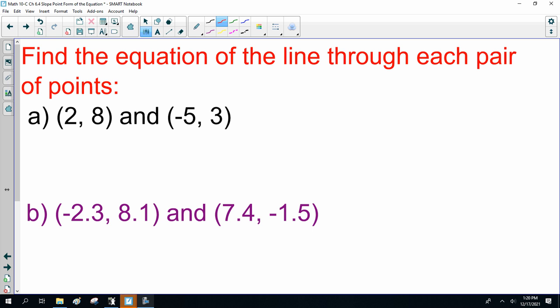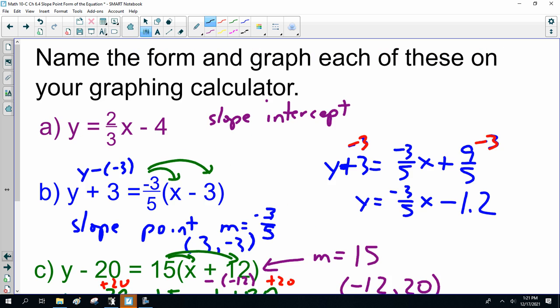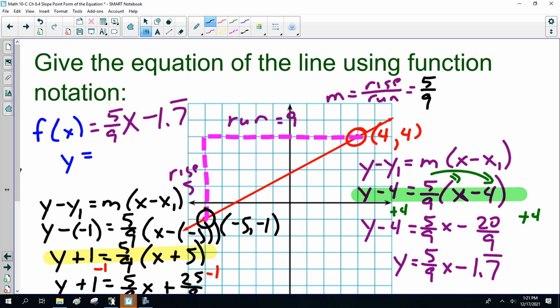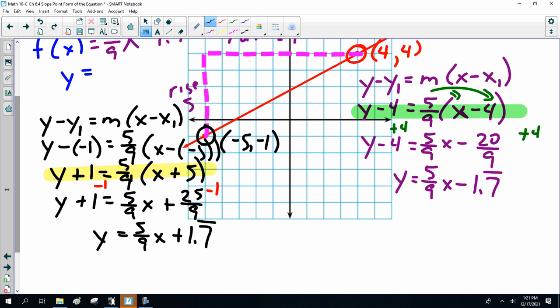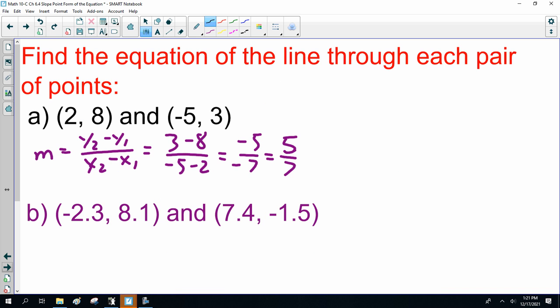2, 8 and minus 5, 3. Well, we've got to figure out m, slope. y2 minus y1 equals x2 minus x1, 3 minus 8, minus 5 minus 2, minus 5 over minus 7, which is 5/7. Now, the only thing we... So, we've got the slope here, 5/7. Now, the problem is, which point do I choose? Because as I pointed back here a couple examples back, you will get a different looking equation based on which point you choose.